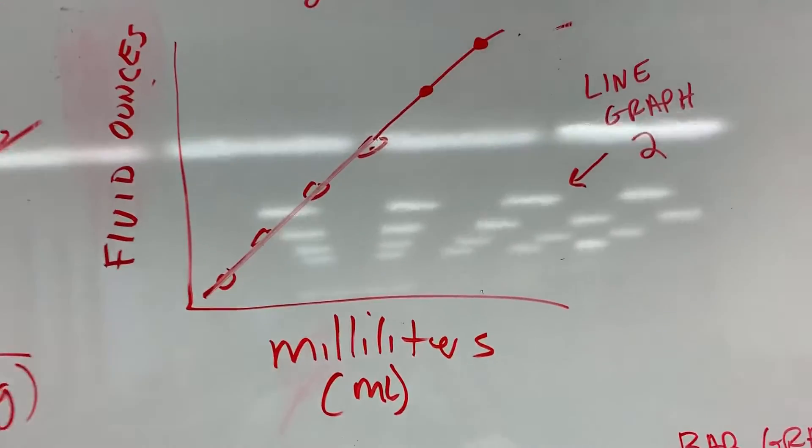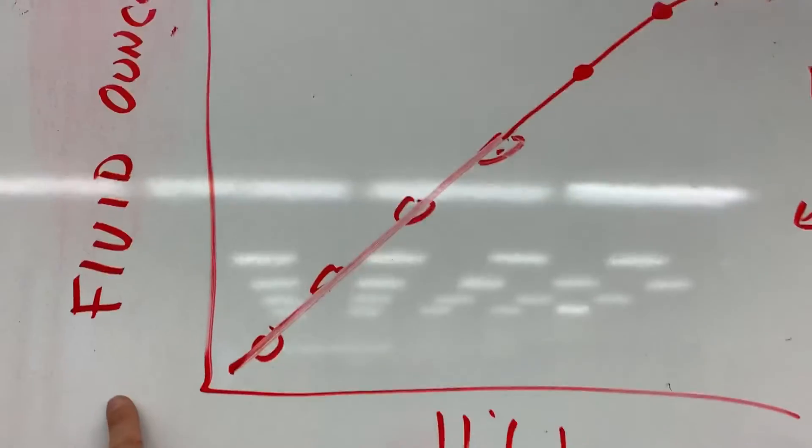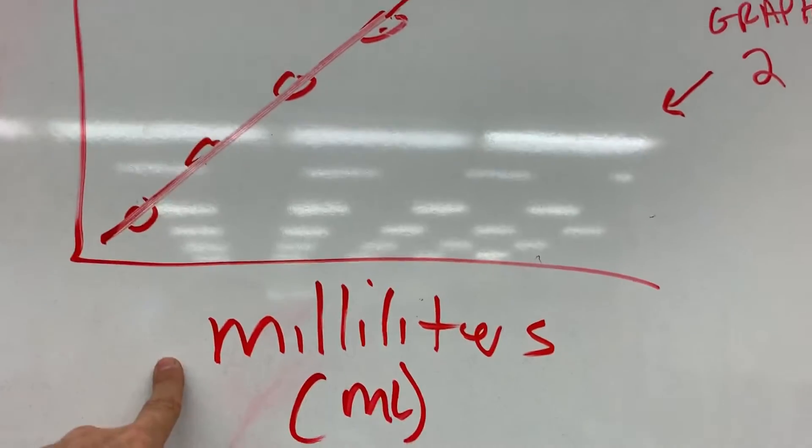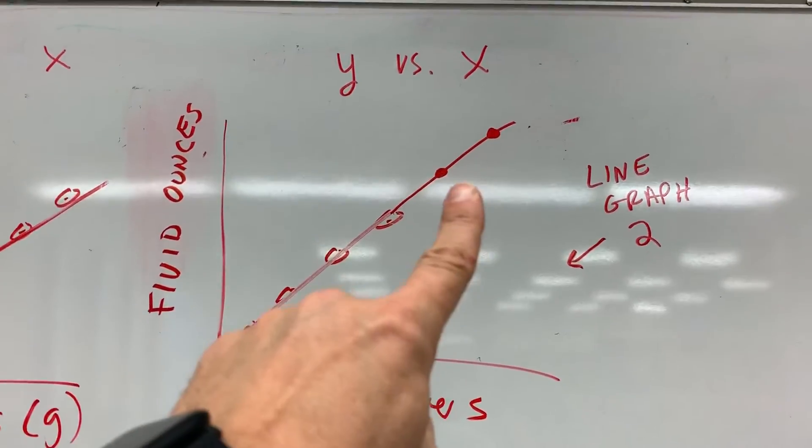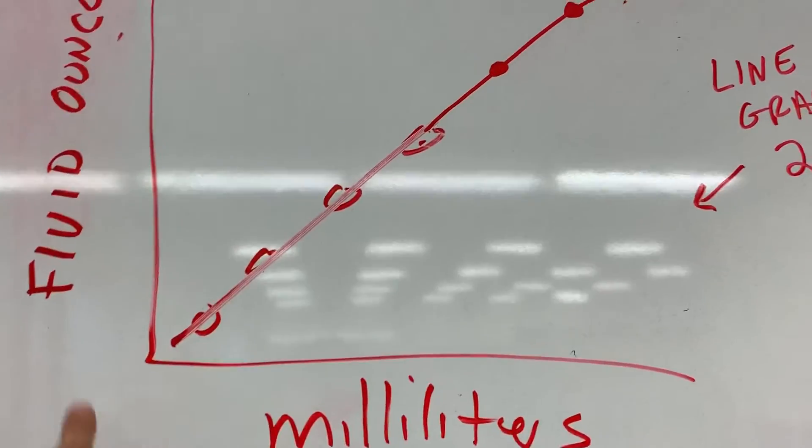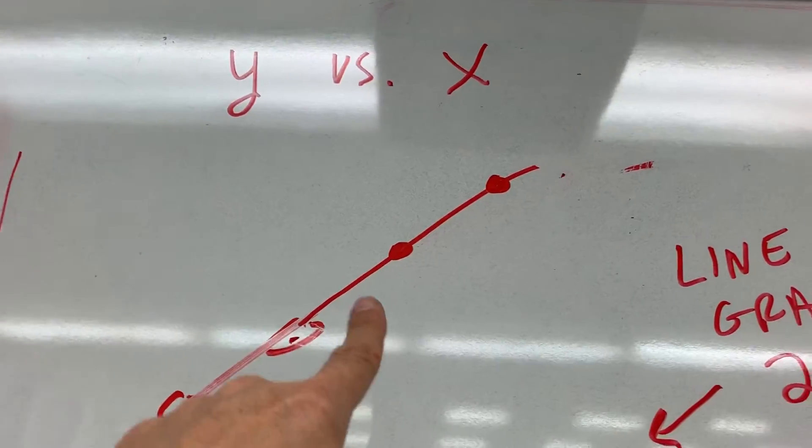For those of you going for an A-, you're going to do this fourth graph. Same idea, except this is your fluid ounces versus milliliters. You're going to, same thing, label the axes, scatter plot with inserting a line on top or a line graph.